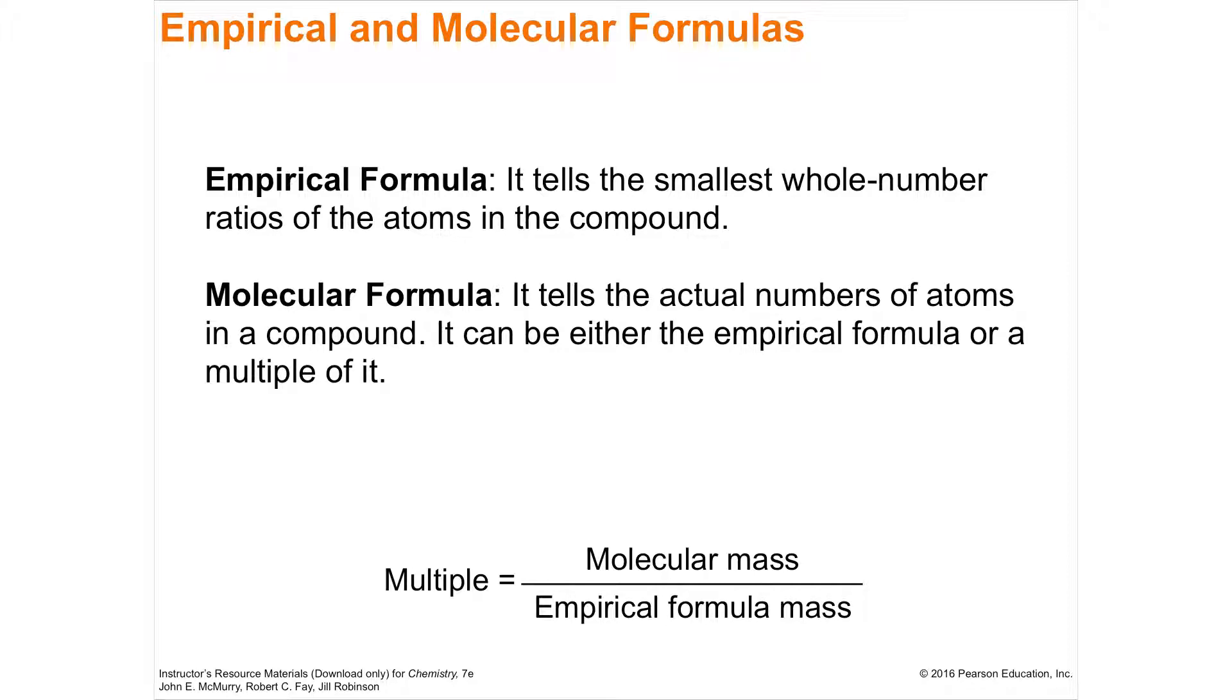If you have a sugar molecule, a sucrose molecule C6H12O6, that is the actual number of elements and ratio of elements in the sugar molecule. There's six carbons, 12 hydrogens, six oxygens. The molecular formula is C6H12O6.